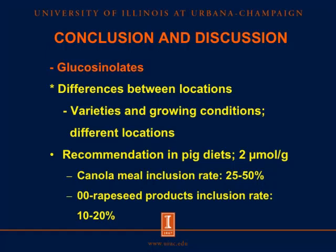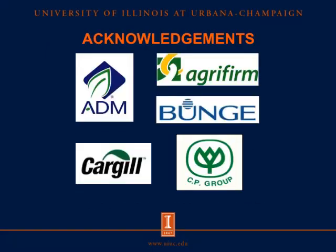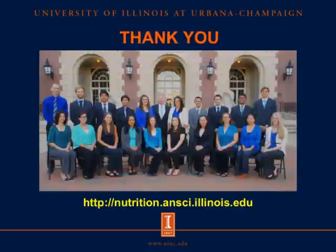According to the recommendation for glucosinolate level in pig diets at 2 micromoles per gram, most sources of canola meal can be used in pig diets at 25–50%, and most sources of rapeseed products can be used in pig diets at 10–20%. With that, we would like to acknowledge ADM, AgriFirm, Bunge, CarQ, and CP Group for funding this research. Thank you.